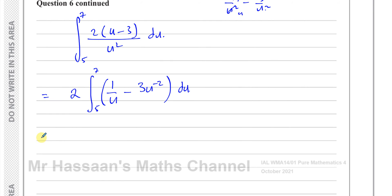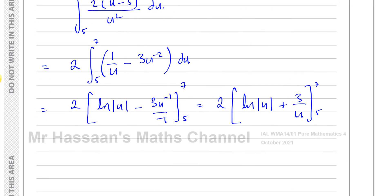So now I have my square bracket. This will become ln|u| minus, this will be 3u⁻¹ over -1, and I have my limits of 7 and 5. So that's 2 times, let me just get it ready to put things in. This is going to be plus 3/u, 7 and 5. So now hopefully we can now write this in the right form.